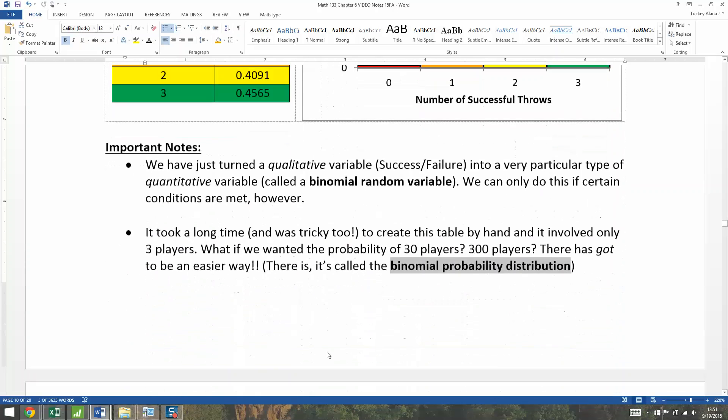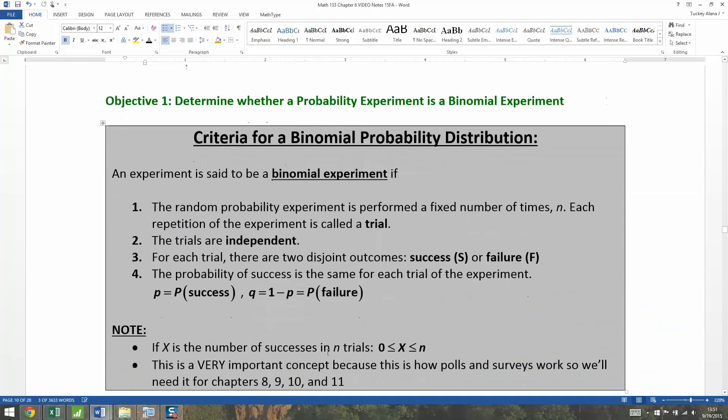It's quite complicated, there's a lot to it. We're only going to be able to use that special formula that finds those probabilities if these four conditions are met. An experiment is said to be a binomial experiment if: number one, the random probability experiment is performed a fixed number of times n, so each repetition of the experiment is called a trial.